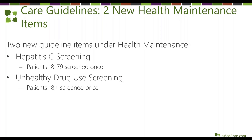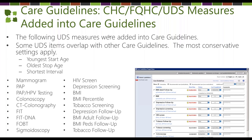The final new care guidelines items are Hep C screening and unhealthy drug use screening — these will appear out of the box when you upgrade. By far the biggest addition is a whole new care guideline: CHC/FQHC or UDS. This is an actual care guideline like health maintenance, diabetes, or peds that you can apply to patients, with many items included out of the box. You can also tailor and configure it to your specific needs.